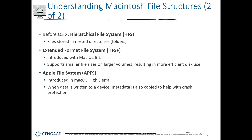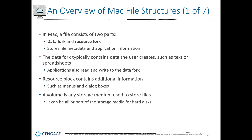APFS was introduced in High Sierra. When data is written to a device, there's also metadata that's copied along to help with crash protection. So with APFS it's not just the data files, but other components are moved along with each individual data file. In Mac, a file consists of two components: the data fork and a resource fork. The resource fork stores file metadata and application information.